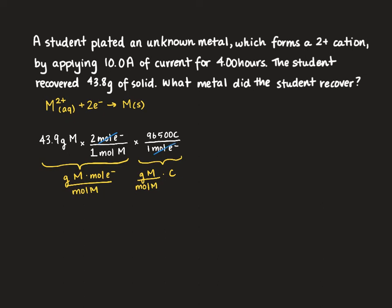We want to get rid of coulombs. To do that we're going to use our current: 10 coulombs per second. We're getting closer. Now we have grams of metal M per moles of metal M times seconds, and the coulombs have cancelled.